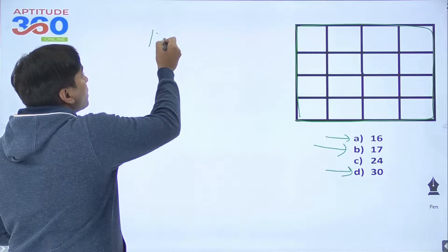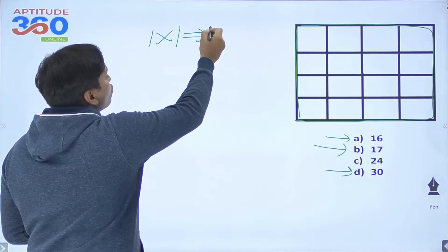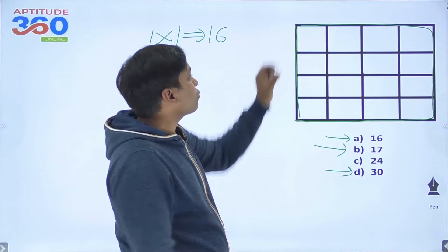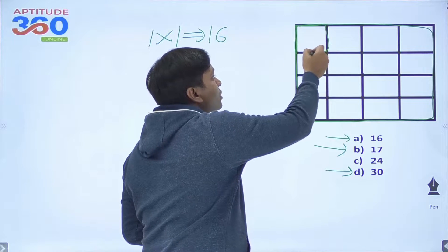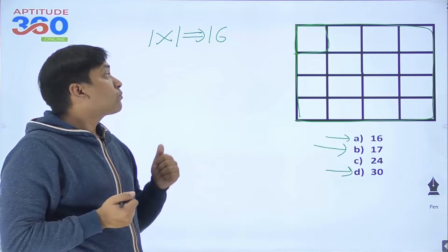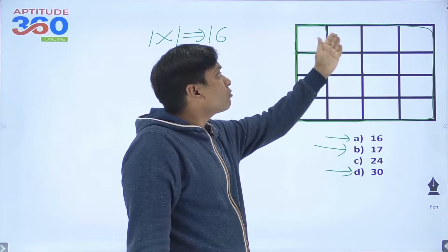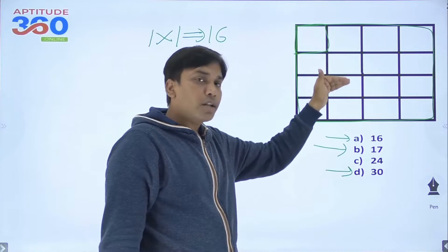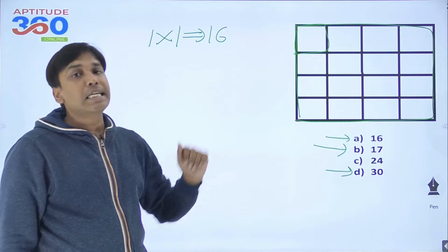Everybody must have found these 16 squares. When I say 1×1, I am talking about the squares of the smallest dimension — 1×1. It is pretty easy to find them: 4 here, 4 here, 4 here, and 4 here. There will be a total of 16 squares.